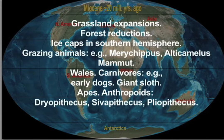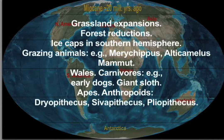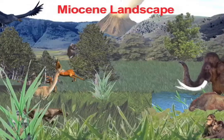Grassland expansions. Forest reductions. Ice caps in the southern hemisphere. Grazing animals like Merychippus, Alticamelus, Mammoth, Whales. Carnivores like early dogs, Giant sloth. Apes and anthropoids like Dryopithecus, Sivapithecus, Pliopithecus.